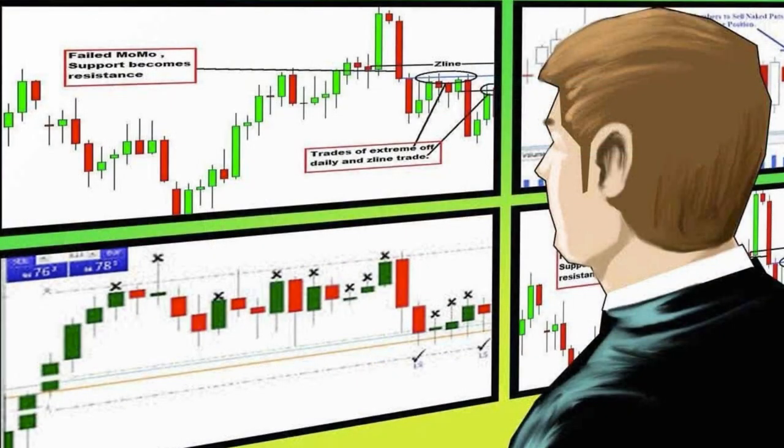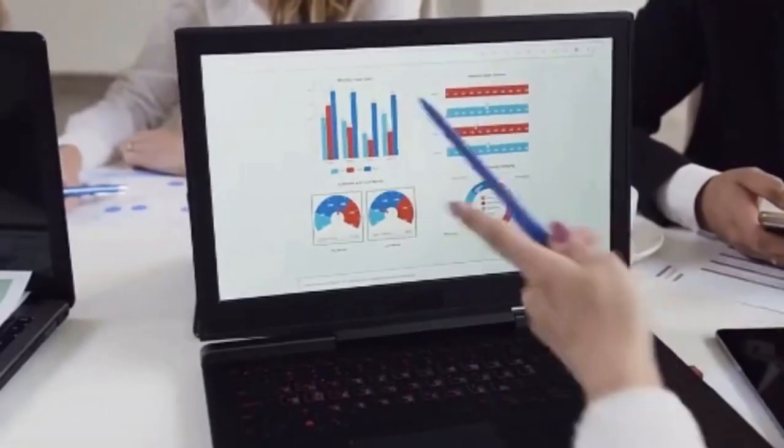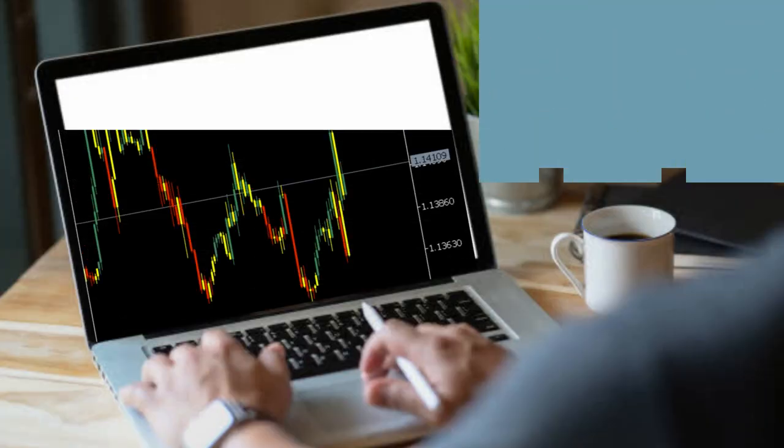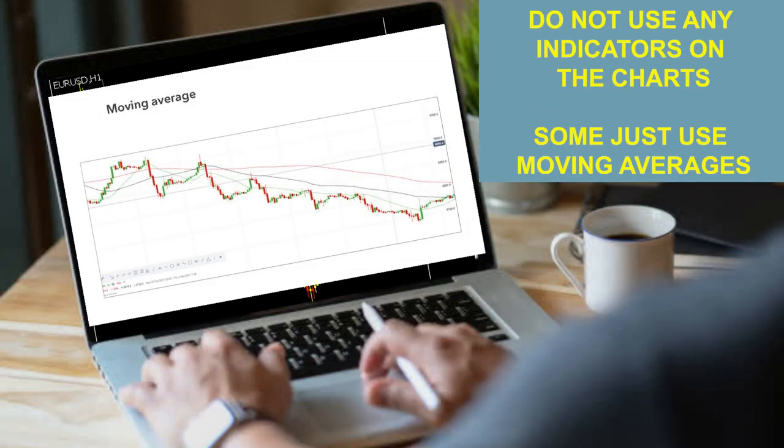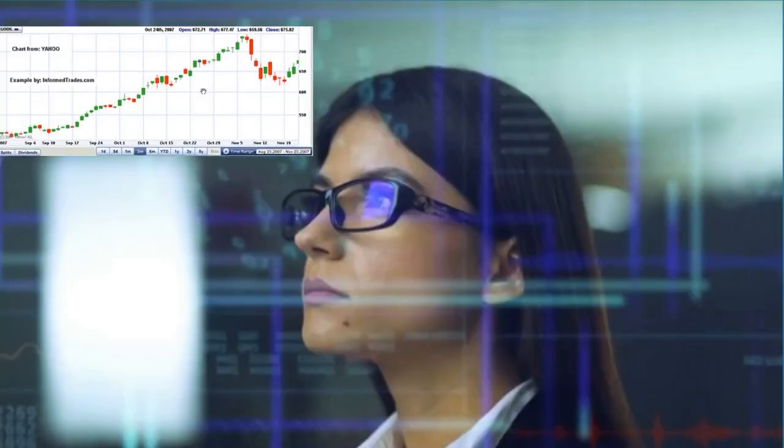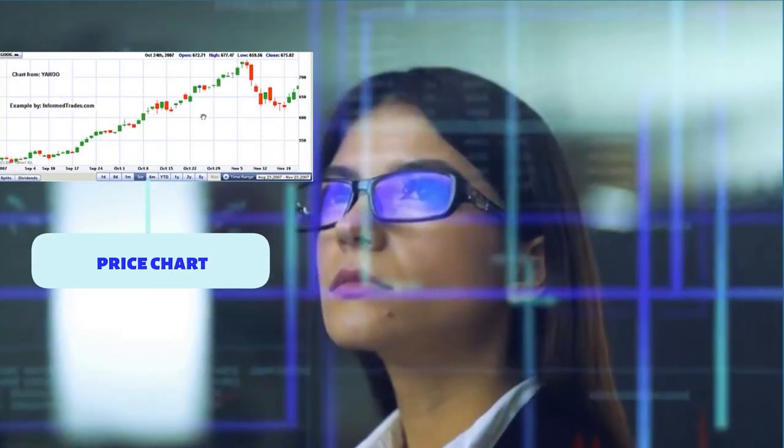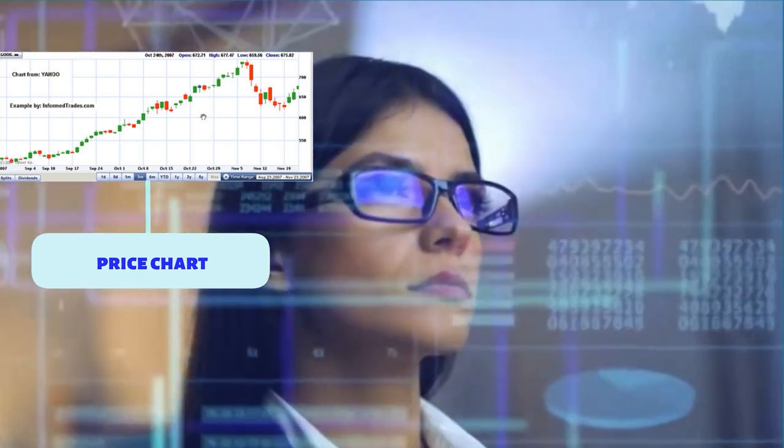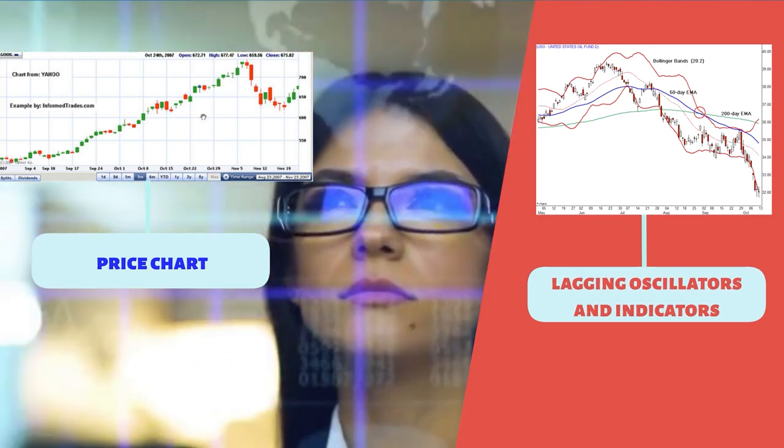Many price action traders make trading decisions using candlesticks on a naked price chart, which is provided by most charting systems and brokers. Most traders do not use any indicators on the charts, and some may just use moving averages to help identify areas of dynamic support and resistance. By reading all essential information directly and instantly from the price chart, the decision-making process becomes very effective and straightforward, unlike the lagging information generated by oscillators and indicators.